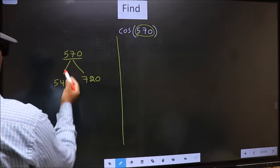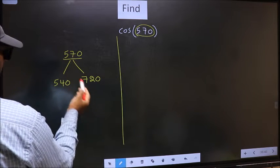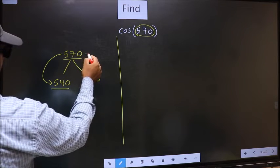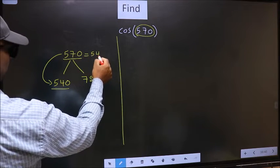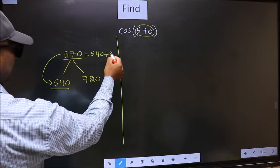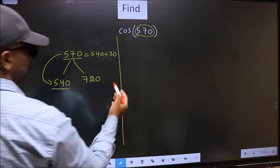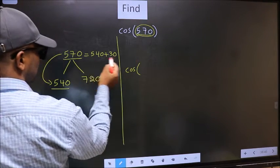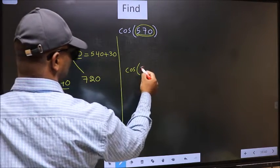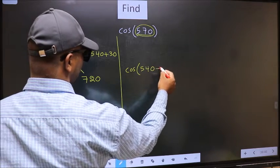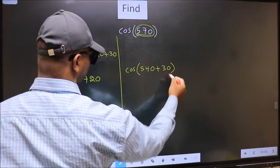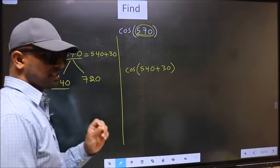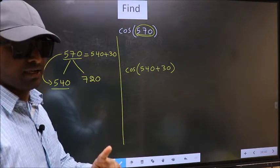Now, 570 is close to which number? This is close to 540. So, 570 now should be written as 540 plus 30. So, this will become cos. In place of this, now we write this: 540 plus 30. This is your step 1.